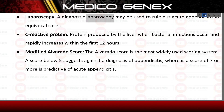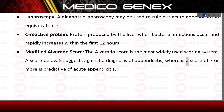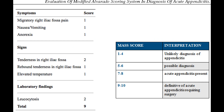Laparoscopy: a diagnostic laparoscopy may be used to rule out acute appendicitis in equivocal cases. C-reactive protein: a protein produced by the liver when bacterial infections occur, which rapidly increases within the first 12 hours. Modified Alvarado score: the most widely used scoring system. A score below 5 suggests against a diagnosis of appendicitis, whereas a score of 7 or more is predictive of acute appendicitis.